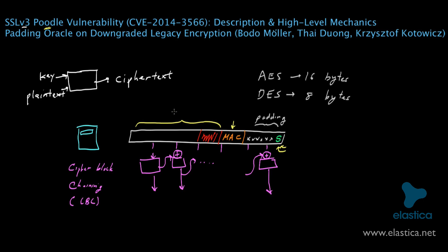It turns out that because of how this padding was done, a bad guy can indeed tamper with the data sent en route and get away with it just often enough to pose a problem. The bad guy can do this in a way that allows him to decipher some of what was sent. Imagine a bad guy is actively eavesdropping on your network and sees this data going by. He will quickly modify it en route by copying one of the internal blocks — specifically the block containing the encryption of the most sensitive data — and copying it to the final section that contained the padding and the size of the padding.